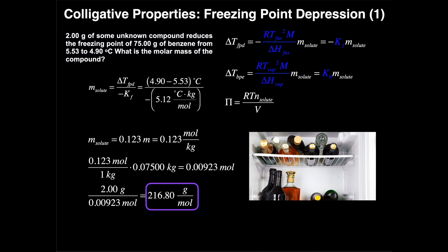In this practice problem, we won't use that expanded formula — we'll use the simpler form. The question: we have two grams of some unknown compound that reduces the freezing point of 75 grams of benzene from 5.53 to 4.90 degrees Celsius. What is the molar mass of the compound? Note that the big M in the Kf expansion is the molar mass of the solvent — that's benzene here — not the molar mass of the unknown compound, which is the solute.